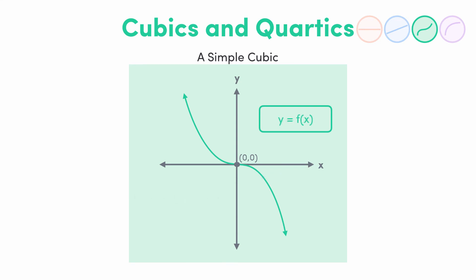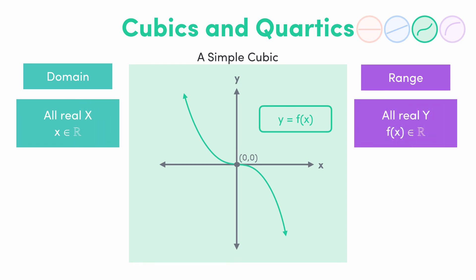Cubics work just the same as straight lines in terms of domain and range. Any x value can slot into the function and be cubed, and any value of f of x can be achieved with a suitable x, so the domain and range are both all the real numbers.